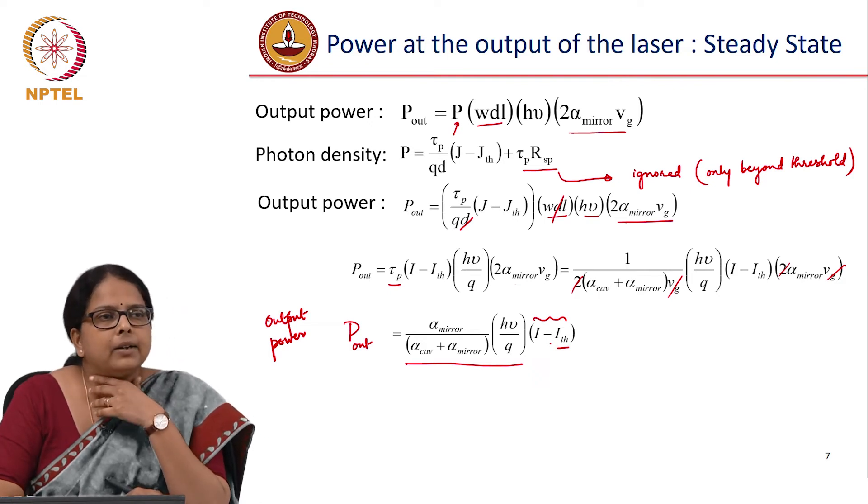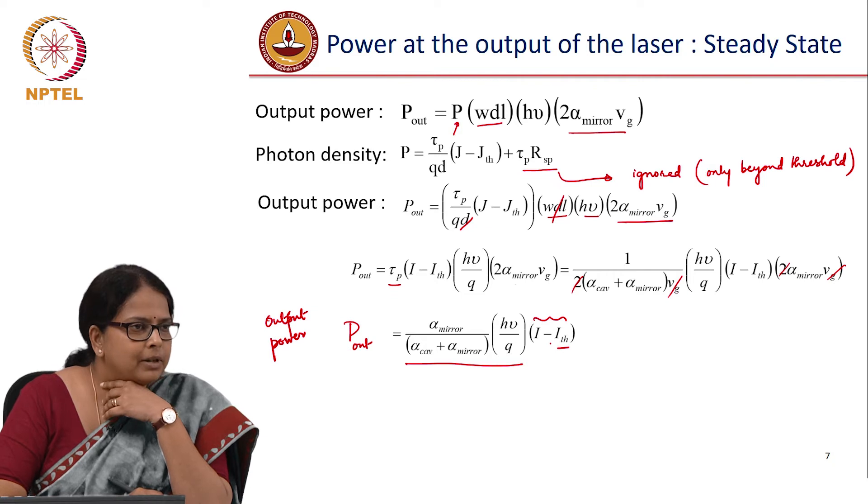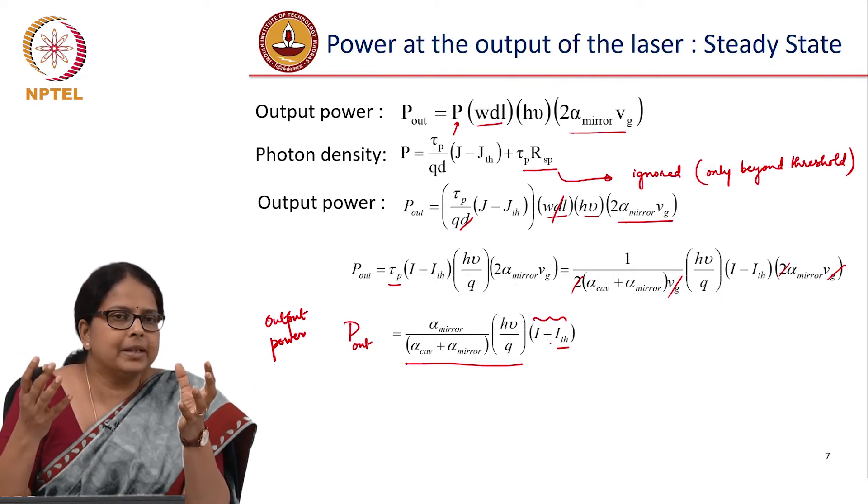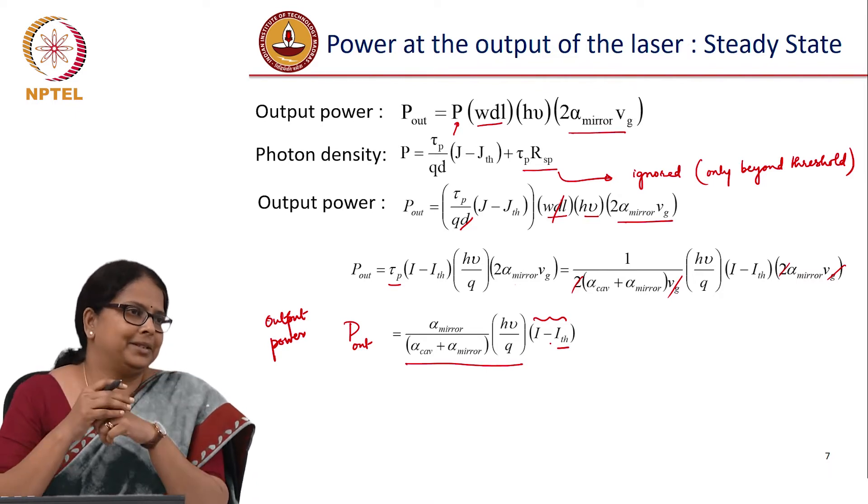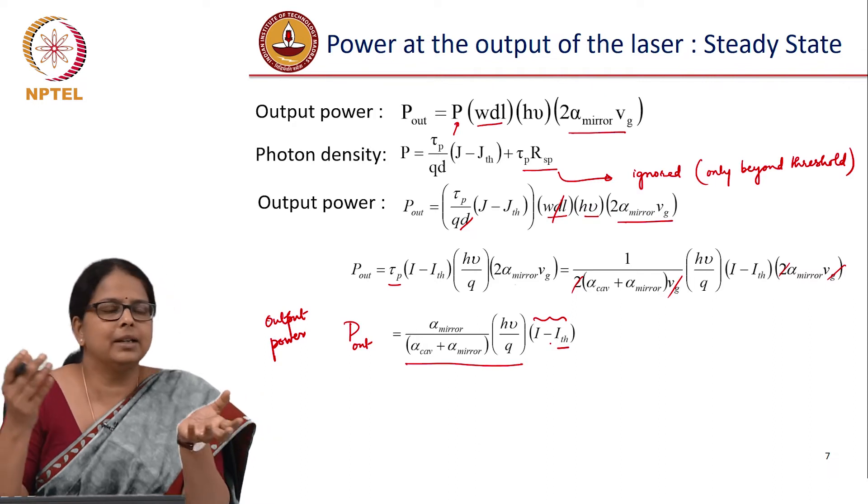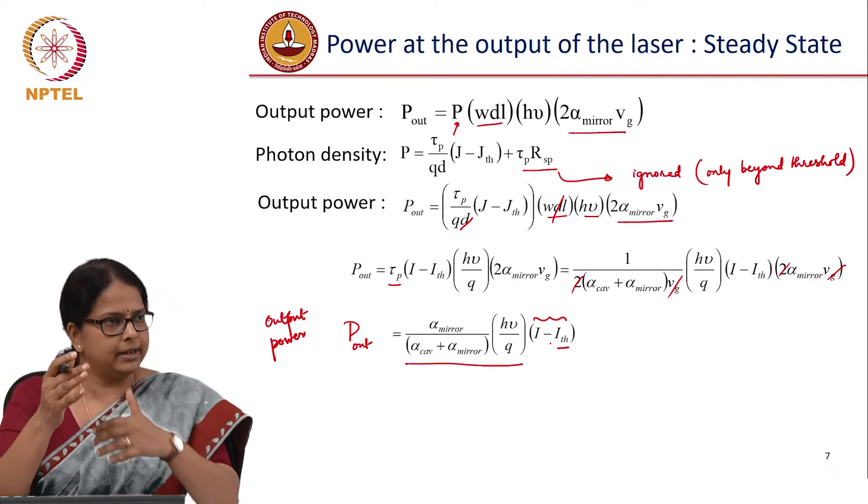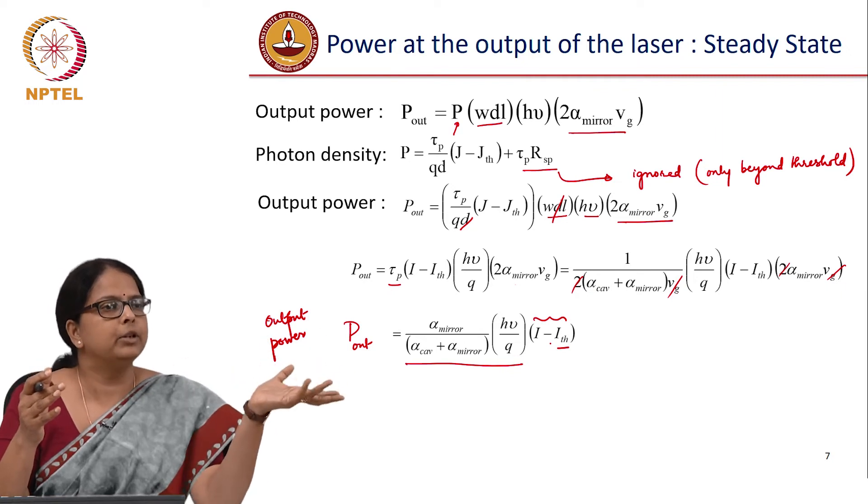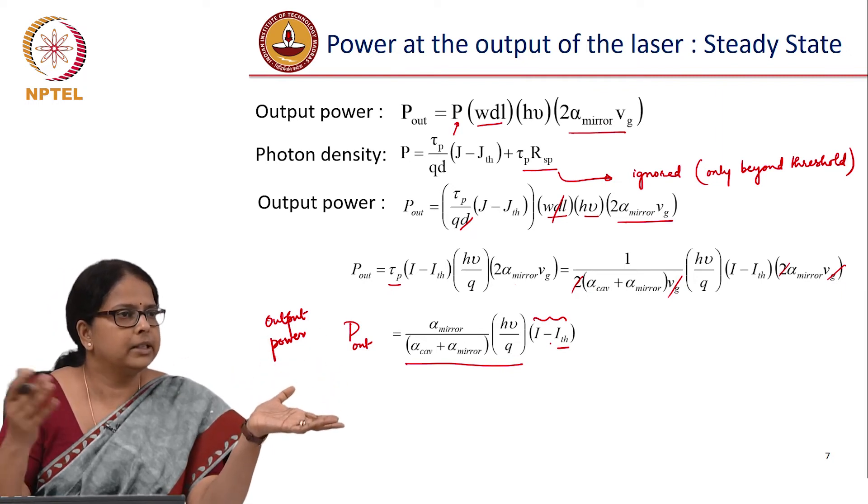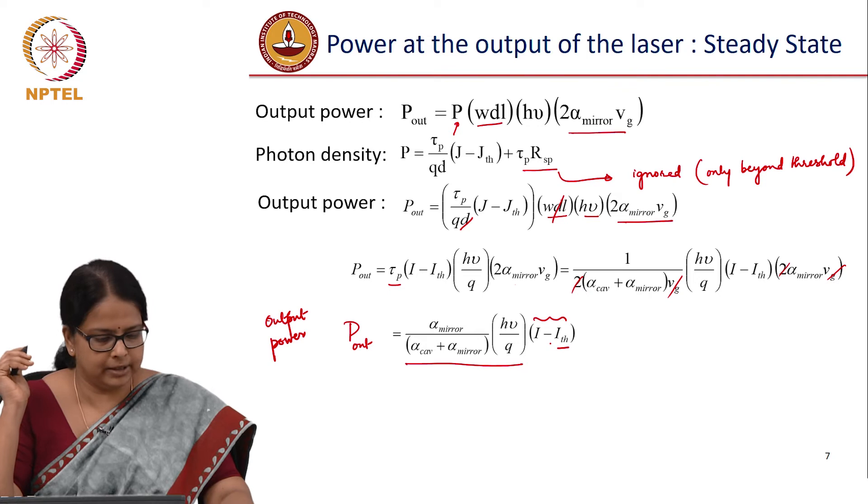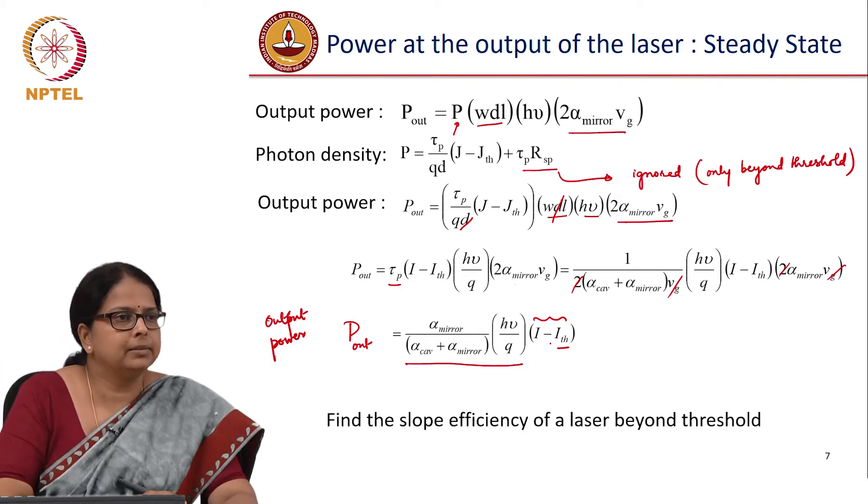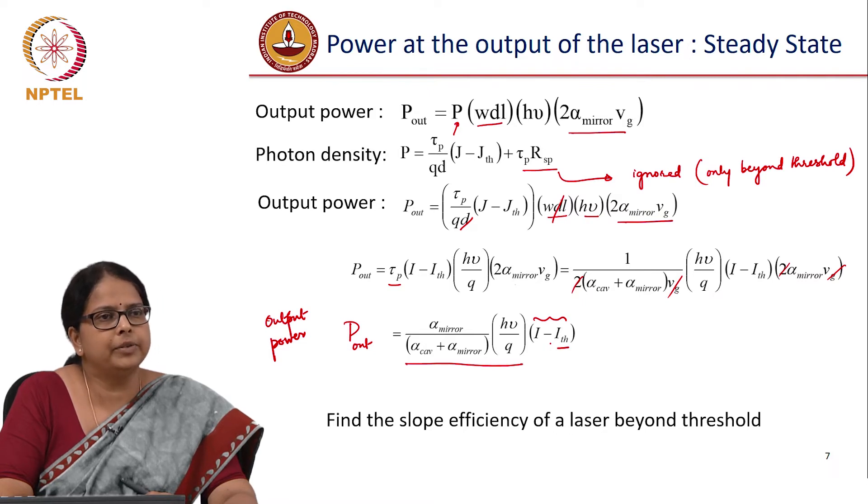So now you can think of calculating the slope efficiency of the system. What would be slope efficiency? As far as you know fiber optic system is concerned, you will start defining the system parameter. So as far as a laser diode is concerned, what is the relevant system parameter? If I give a certain current, how much is the efficiency? How much power am I able to get out of the system? So that is the slope efficiency of the system. We calculated it for LED, we can now calculate it for a laser diode. So what is the slope efficiency? How do you define, how should you define now the slope efficiency?